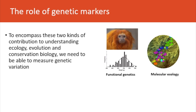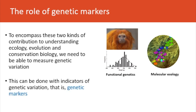This is where genetic markers come into things. We need to be able to measure genetic variation to deliver these two kinds of contribution to our understanding of ecology, evolution, and conservation biology. And this can be done with indicators of genetic variation, that is, genetic markers.